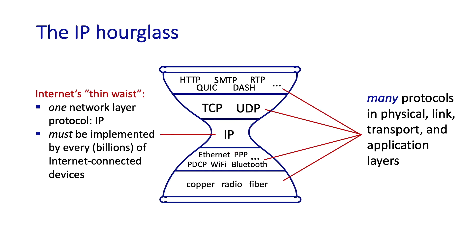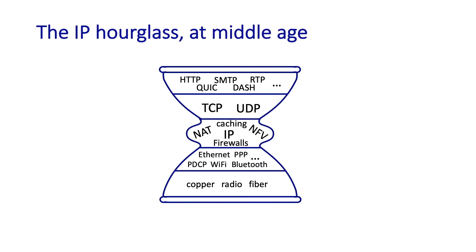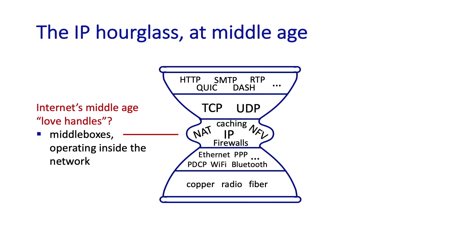IP is the one protocol that absolutely has to be implemented in each and every one of the billions of internet-connected devices. This thin waist hides the fact that networks with very different underlying link layer technologies — from Ethernet to Wi-Fi to cellular to optical — are all part of the internet. IP hides that heterogeneity and provides a simple substrate on which application layer services can be built. With the proliferation of NAT boxes, firewalls, caching, load balancers, and NFV, one might argue this waist is now thickening, as middleboxes perform functions far beyond simple destination-based IP forwarding.